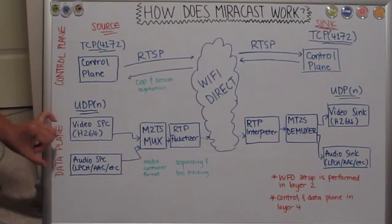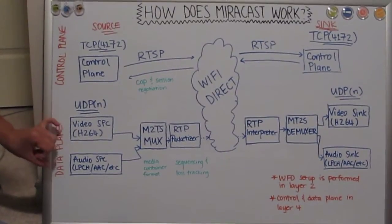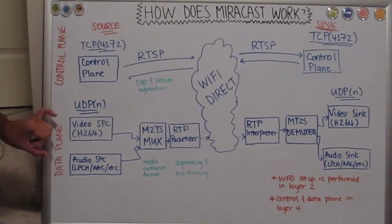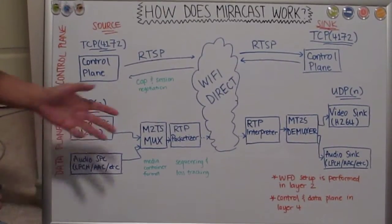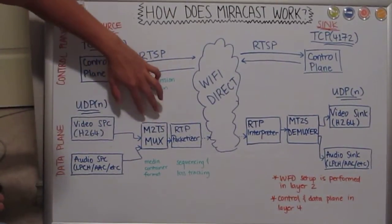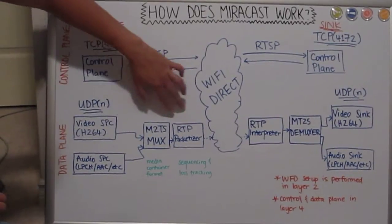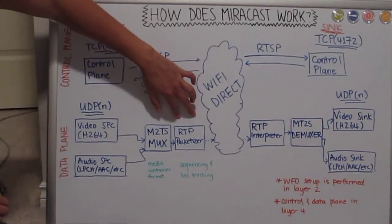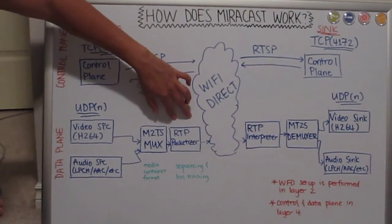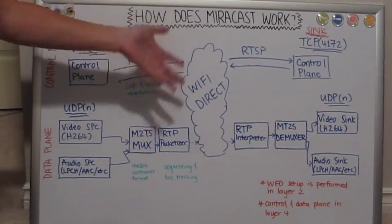So the two streams, the video and the audio source are first muxed into a MPEG-2 transport stream container format. Then the MPEG-2 transport stream is then packetized using RTP header to segment into packets, into MTU sizes that you can fire across the network, or in this case, just the Wi-Fi direct cloud.